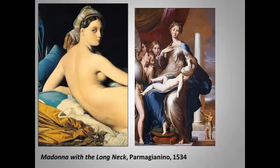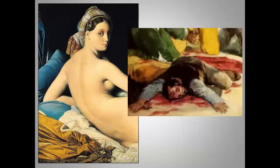We also see Mannerist elements, especially in the exaggerated length of the body. But what don't we see? We don't see the loose brushstrokes or evocative use of color that will characterize many Romantic works. Remember the argument between line and color, between Poussin and Rubens? Ingres was a line guy all the way. French Academy painters prided themselves on producing virtually invisible brushstrokes — the act of painting itself was disguised. Romantic and even more Modernist painters would make the painter's involvement much more obvious and explicit; paintings became more about painting. One reason for that, as we will see, is the advent of photography.